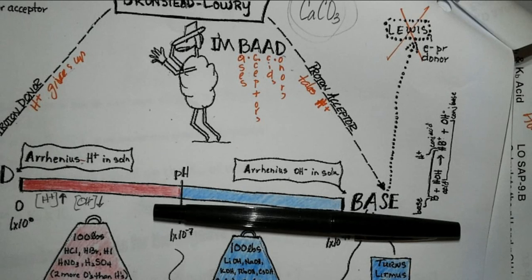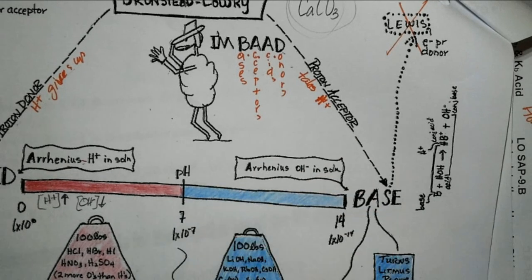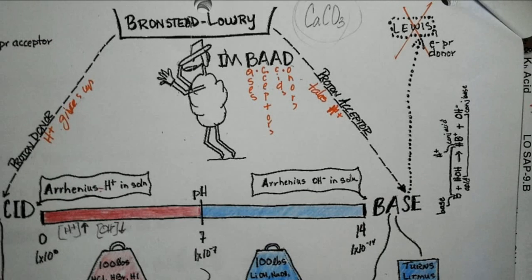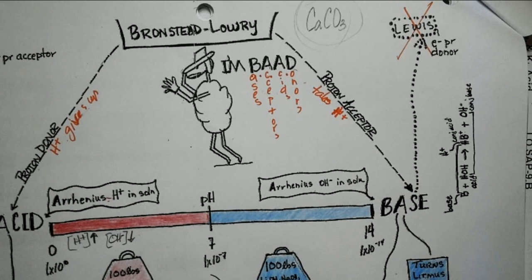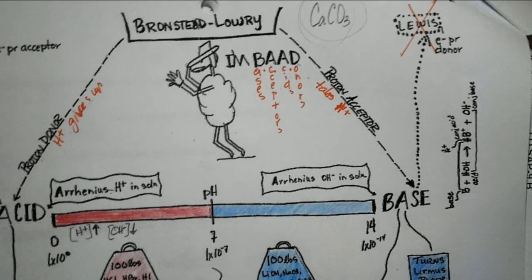Whatever acid-base system you're working with, when you multiply the hydrogen ion concentration and the hydroxide ion concentration together, they should equal 1×10⁻¹⁴.